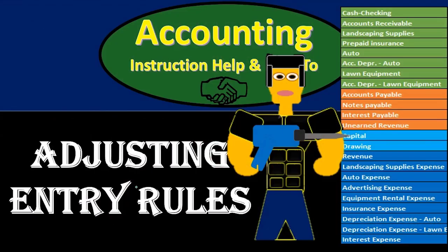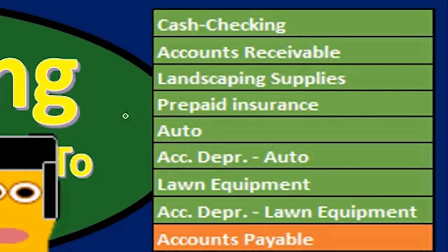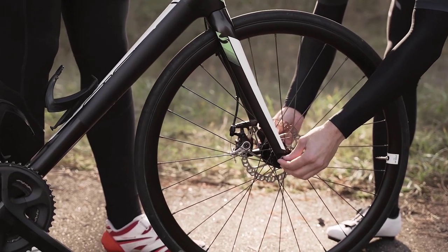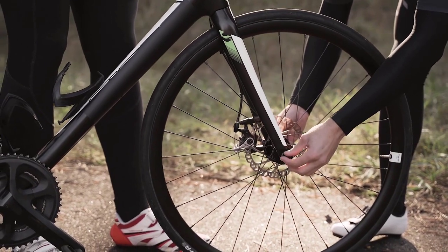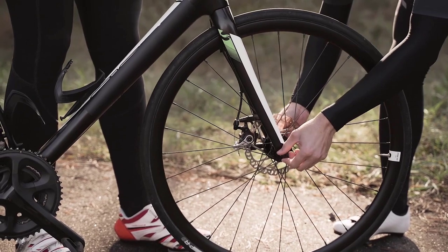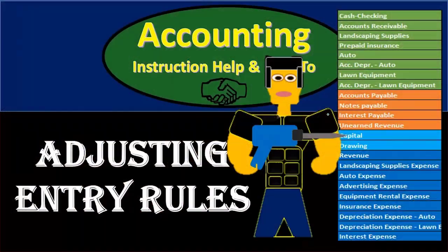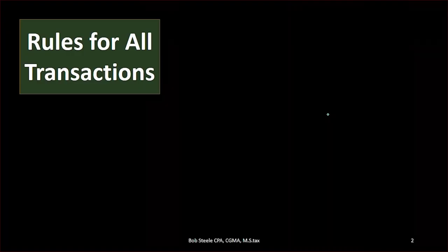The adjusting process is going to adjust accounts such as prepaid insurance, depreciation, unearned revenue — those types of accounts that need to be adjusted as of the end of the time period, as of the financial statement date, in order to make the accounts on an accrual basis as of that date.